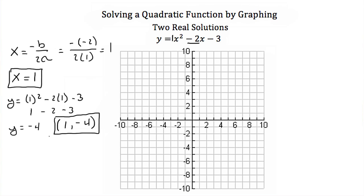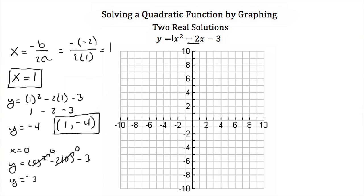Lastly, we need one more point to graph this quadratic. I'm going to pick the y-intercept because that's easy to solve for. That occurs when x is equal to 0. So if I plug that back into our quadratic, we'll have y is equal to 0 squared minus 2 times 0 minus 3. 0 squared is 0 and negative 2 times 0 is 0, so our y-coordinate is just negative 3. So we have the point (0, -3).